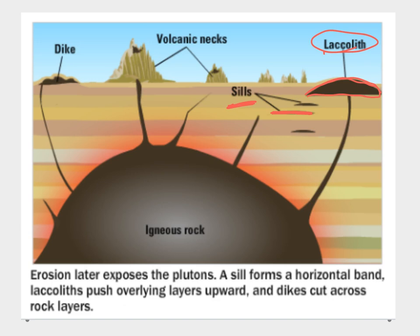We can also have what we call a dike. A dike is different from a sill and a laccolith in the sense that a dike will go across rock layers. It'll find a crack or a fault, and if it finds a crack between the layers, it'll fill that in — and that's how dikes form.